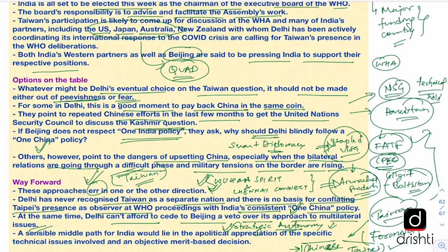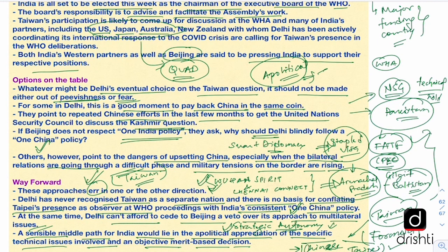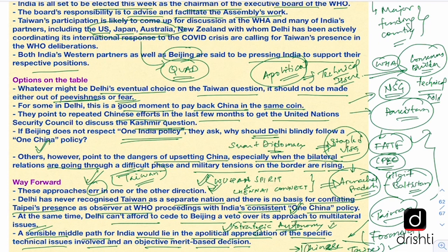The editorial concludes that a sensible middle path for India would lie in an apolitical appreciation of the specific technical issues involved and an objective, merit-based decision. India should treat this as a technical issue and play the role of consensus builder in the WHO Executive Board, so that consensus among countries decides whether Taiwan enters as an observer — based purely on technical, objective, and merit-based considerations.